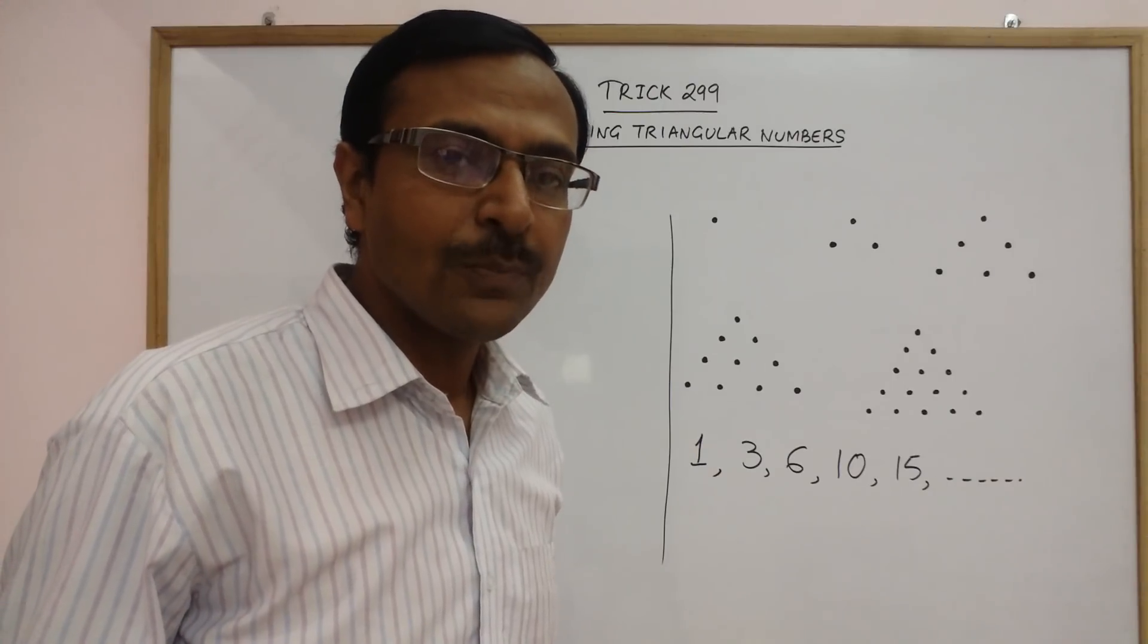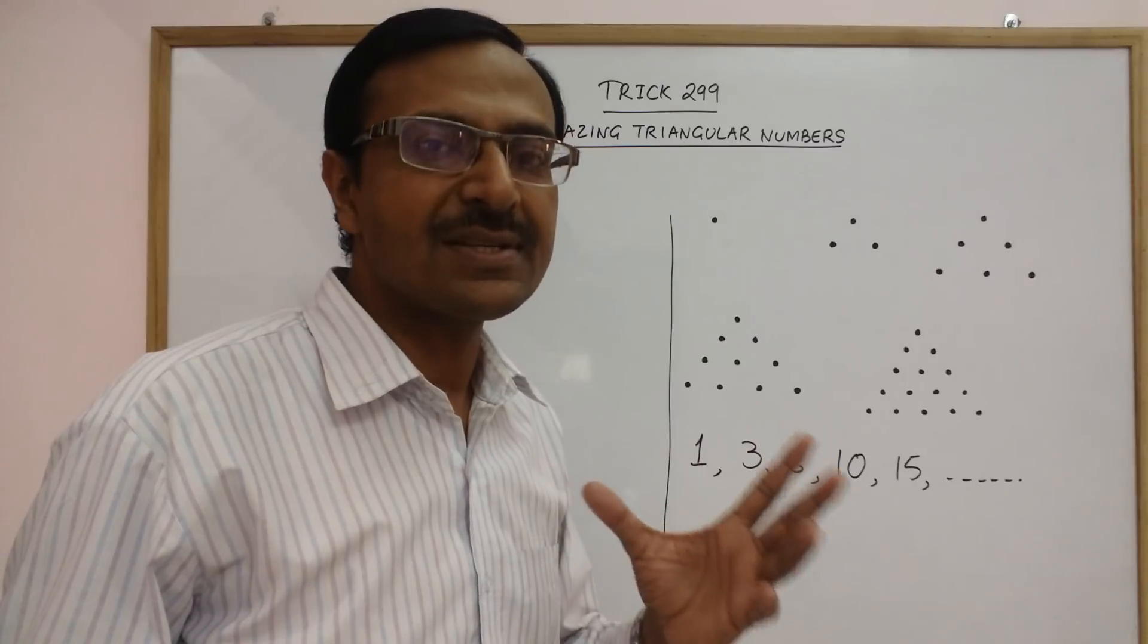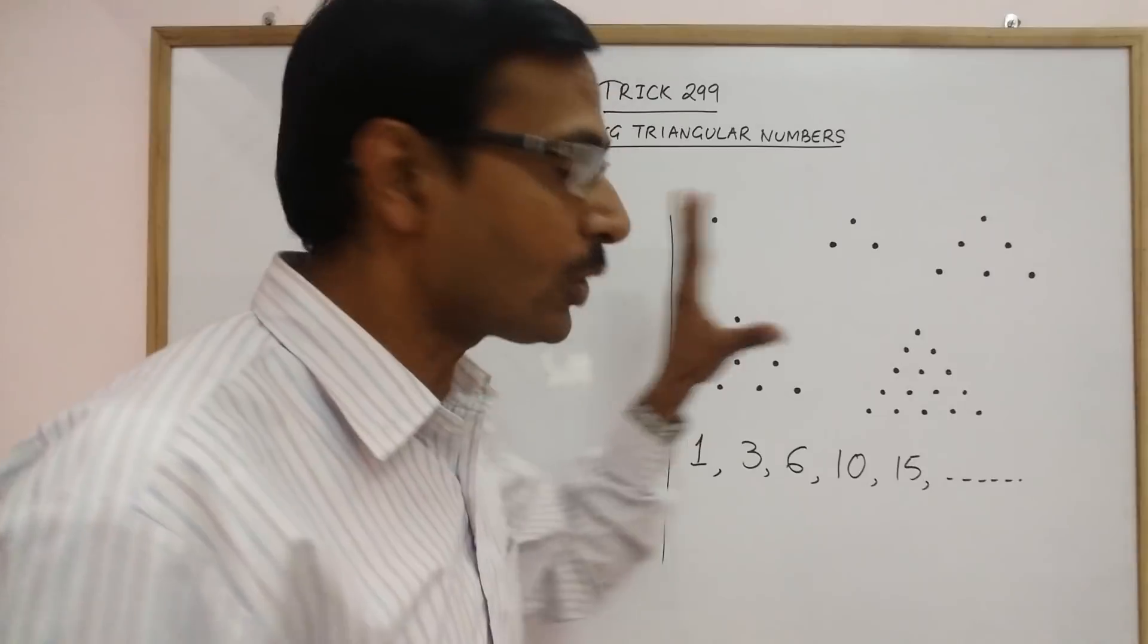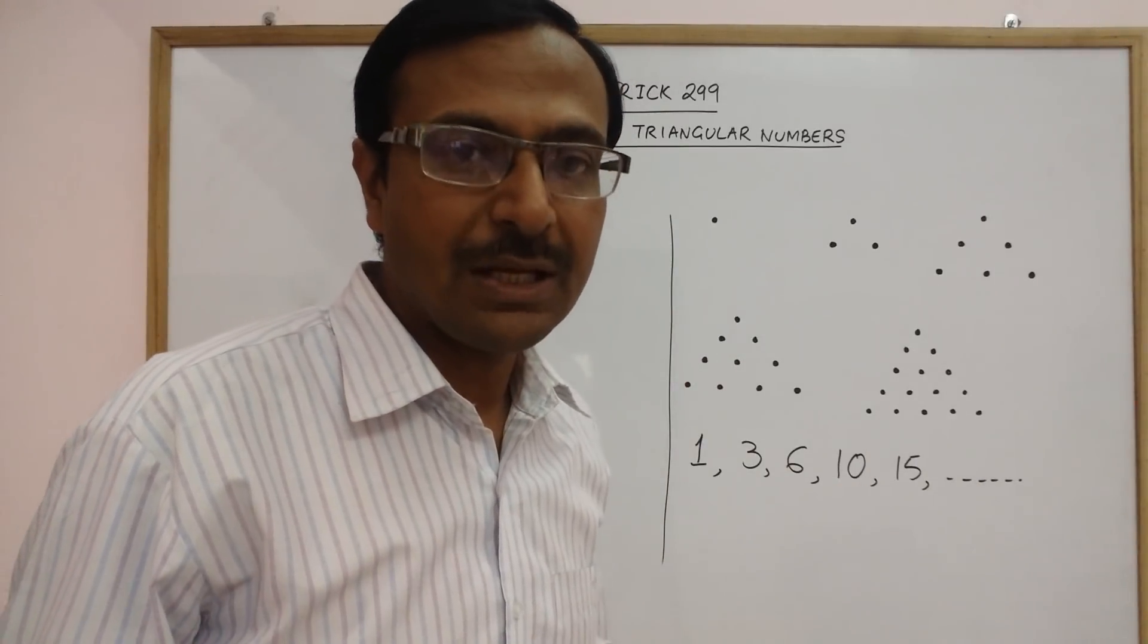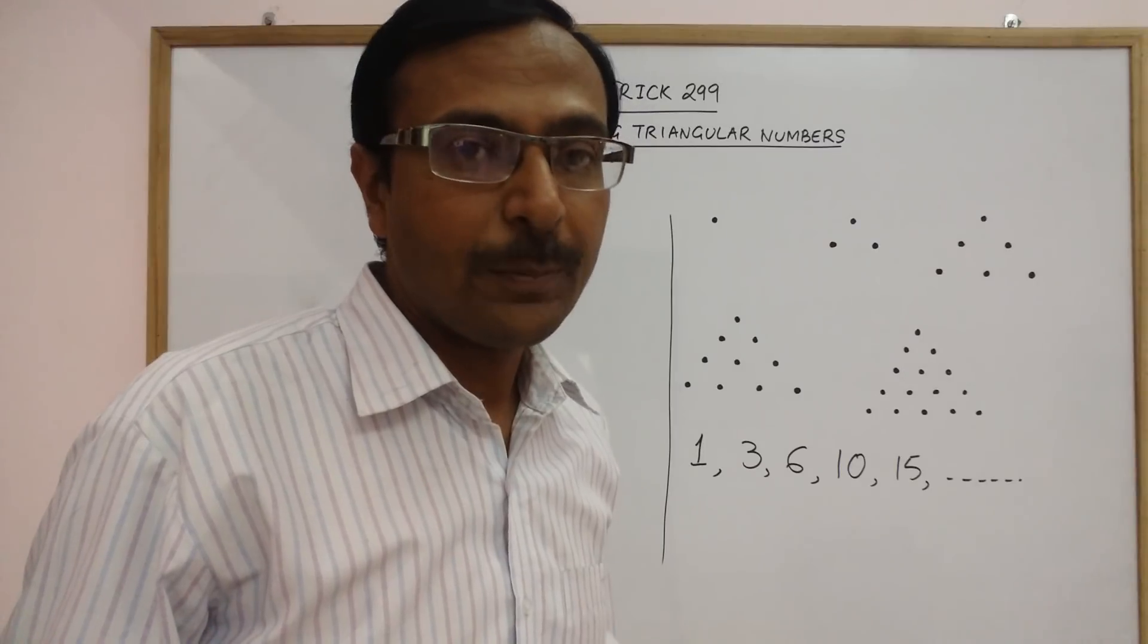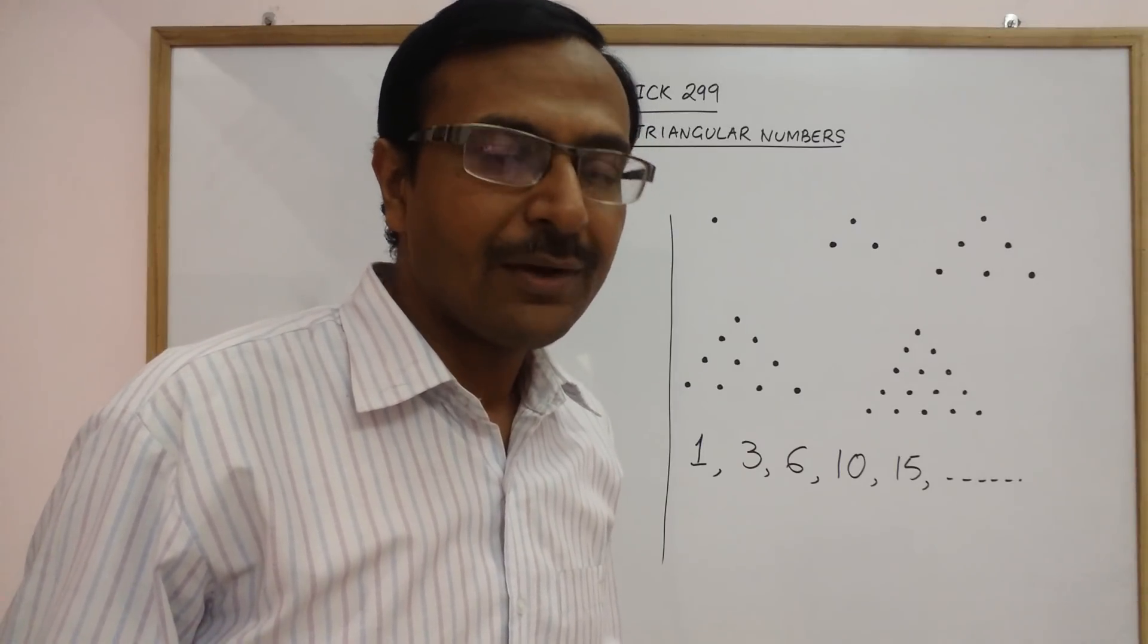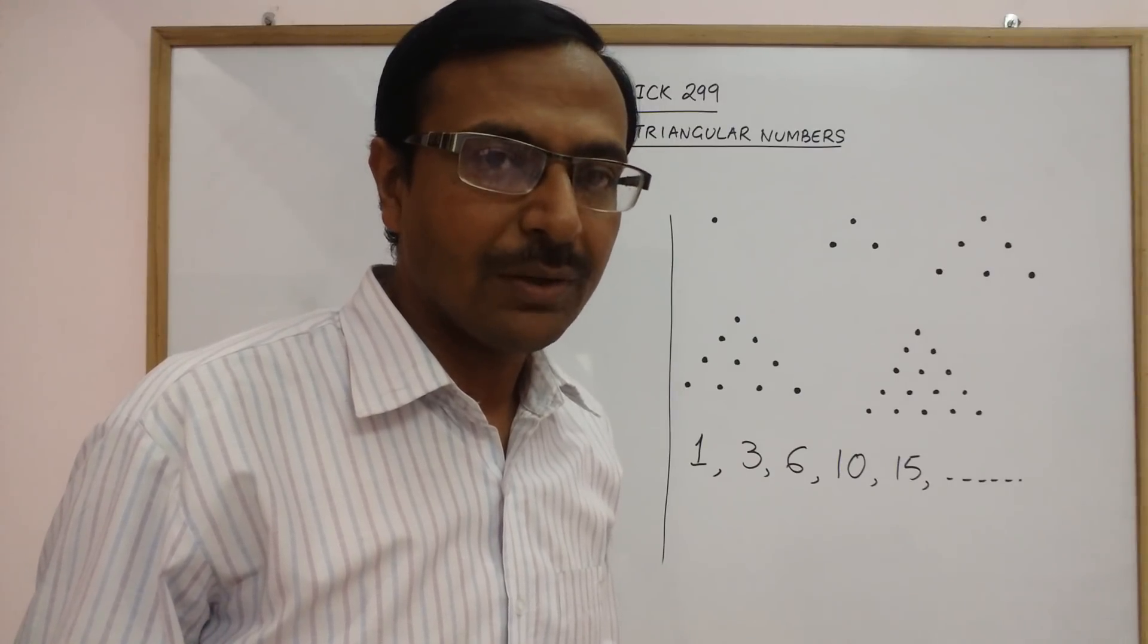Now, suppose I want to know the 21st triangular number. Then, I cannot draw 21 rows of dots and then count all the dots which are used in making that triangular number. It will be a very, very tedious process. So, now I need to know a formula through which I can find any triangular number.